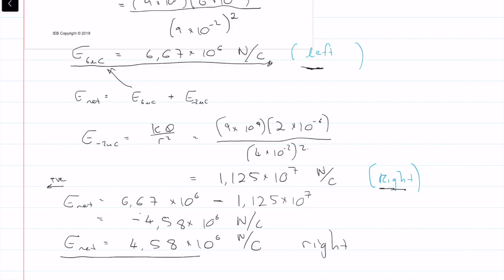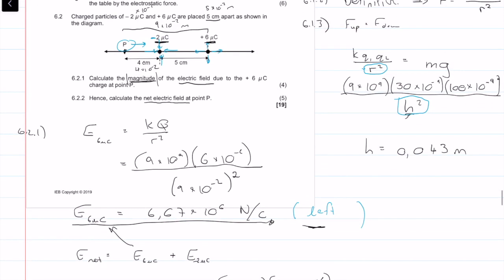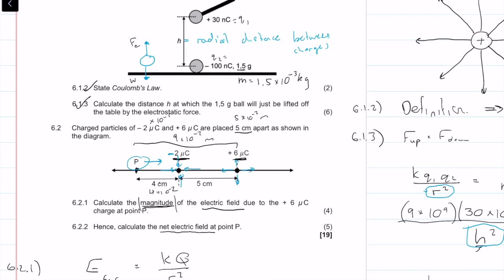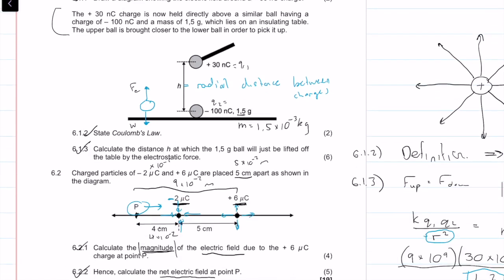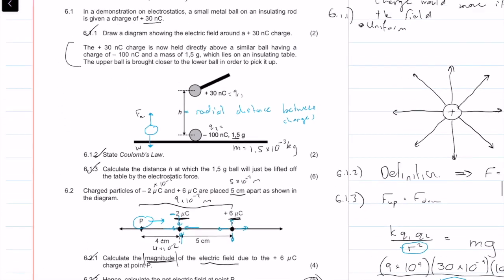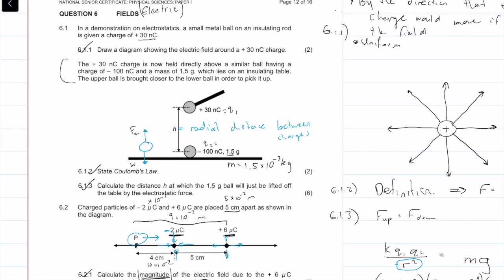That is our net field. It is the sum of the individual fields using superposition, basically. We get five marks there. So that's that question done and we get a total of 19 marks.